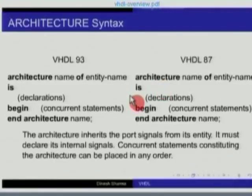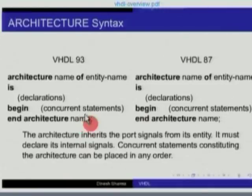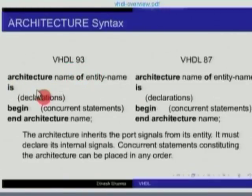For example, I could have two architectures for an adder. I could have 'architecture ripple_carry of adder is' and then declare all the signals — carry_in, carry_out, sum, etc. — then 'begin' followed by concurrent statements and finally 'end architecture ripple_carry'. Similarly, I could have another architecture of the same adder: 'architecture carry_select of adder is', declarations as before, the logic for implementing a carry select adder, and finally 'end architecture carry_select'. So we have one entity called adder and two architectures for it.